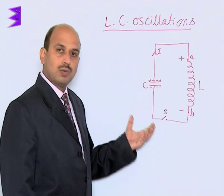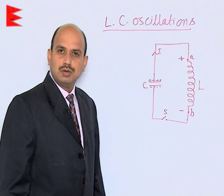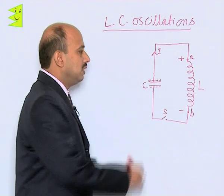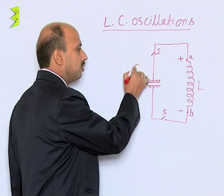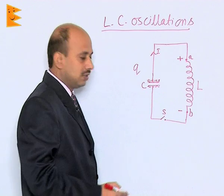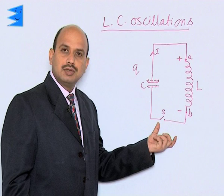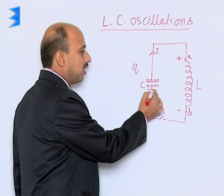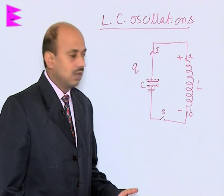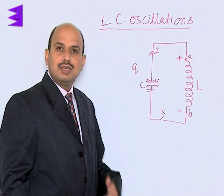In LC oscillations, first we take a capacitor and inductor both connected together, and initially the capacitor is fully charged. The fully charged capacitor has the maximum charge — let it be Q. As the circuit is completed with the inductor, the charge in the capacitor starts decreasing, meaning the capacitor starts discharging, and because of this decrease in charge, current starts flowing and increases with time.